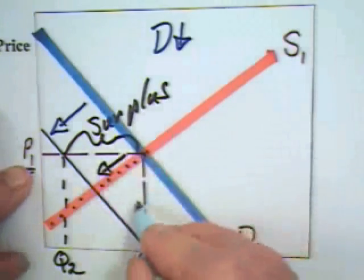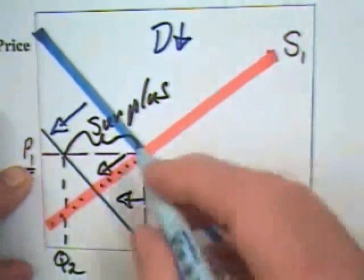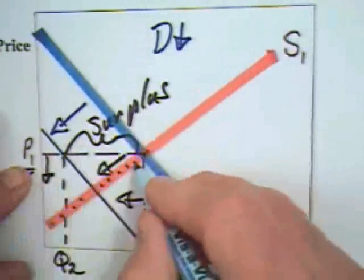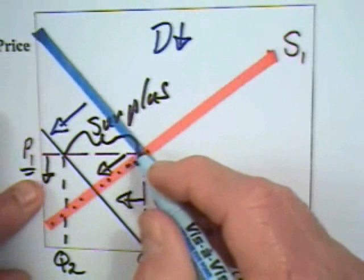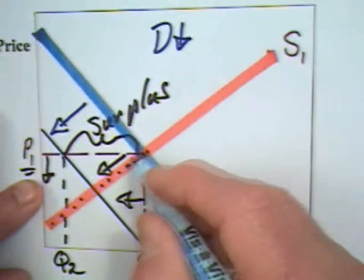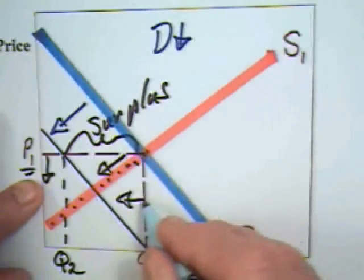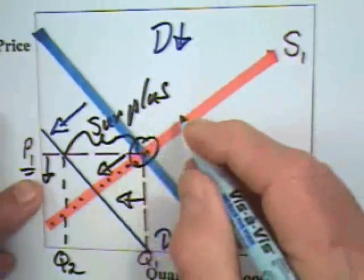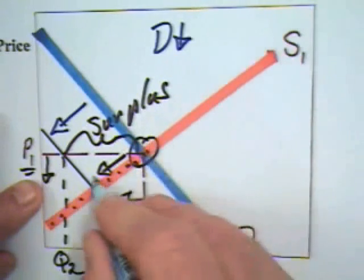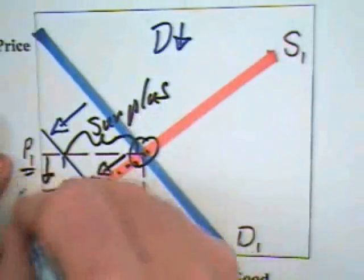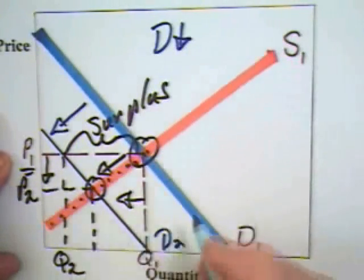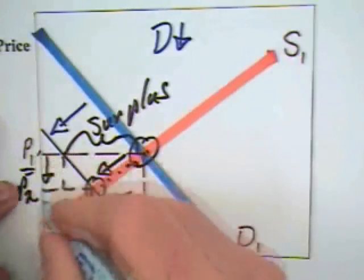As the price comes down, producers contract the quantity supplied. Why? Because the price, as it goes down, goes below the marginal cost. If the price is below the marginal cost of production, then producers are losing money on producing those units, so they will curb their output. We know that the market will move from this intersection to this one, which means that in equilibrium, the price will go down from P1 to P2.